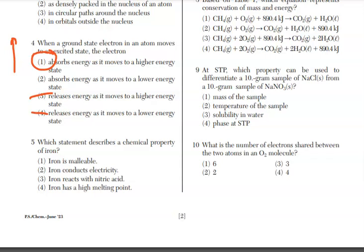For number 5, which statement describes a chemical property of iron? Chemical means it's how it's interacting with other substances. It is not that it's malleable. That's physical. Conducts electricity is physical. Reacts with. There you go. Choice 3.